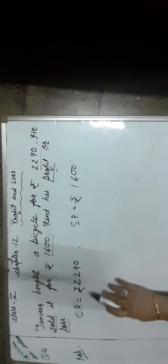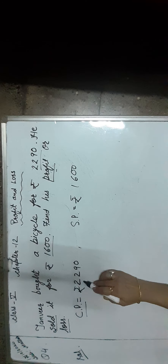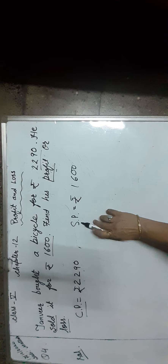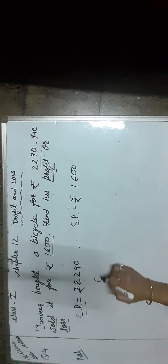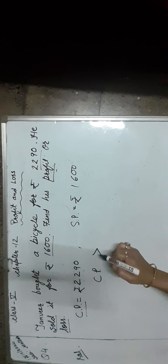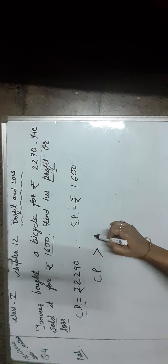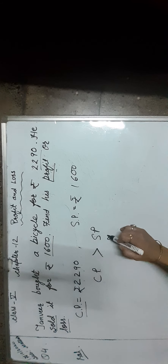Here, as you can see, cost price is Rs. 2,290 and SP — that means selling price — is Rs. 1,600. So students, cost price is greater than SP. So there is a loss.